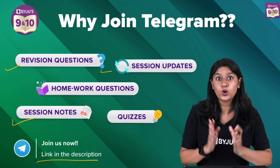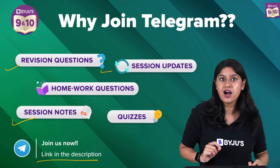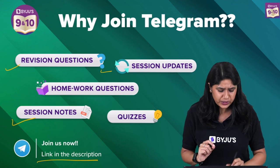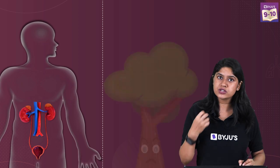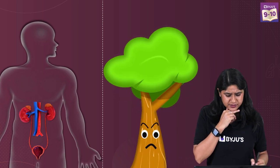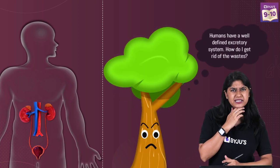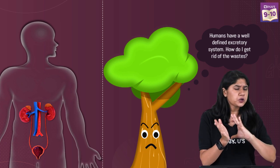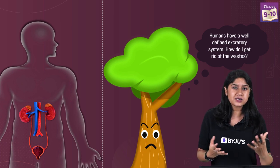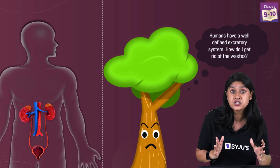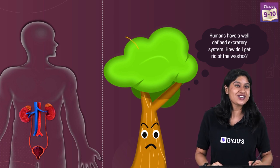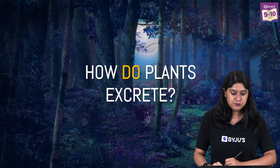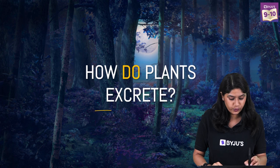Now let's start with our session. We know that in humans we have the excretory system, but what about plants? Plants don't have a circulatory system like humans to release waste, so in today's class we will be discussing how plants actually excrete their waste.